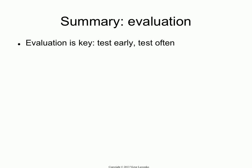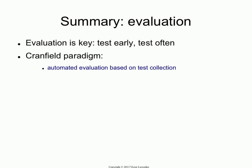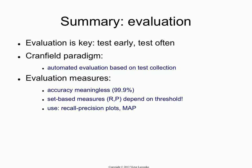To summarize: evaluation is what allows us to tune algorithms automatically, which is really a great thing. The Cranfield paradigm gives you a test collection so you compute numbers instead of running user studies every time you change the algorithm — that's a great facilitator. On evaluation measures: don't ever use accuracy or anything like accuracy, because these tasks have unbalanced class distribution, making accuracy a horrible metric.